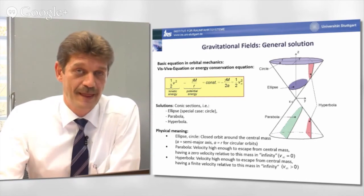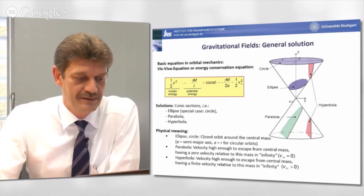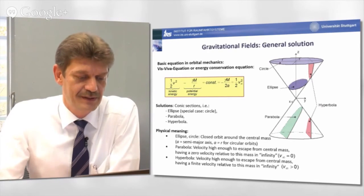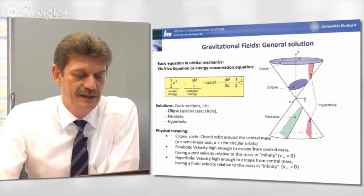And finally, a hyperbolic orbit would be an orbit which has at a certain distance r, a velocity v, which is high enough to escape from the central mass, but having also a finite velocity higher than zero in infinity relative to this mass.